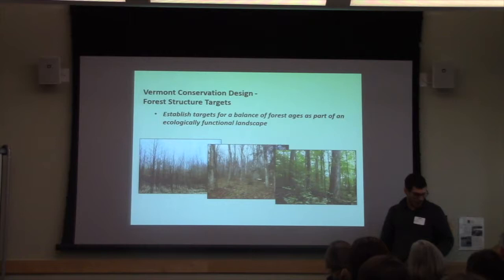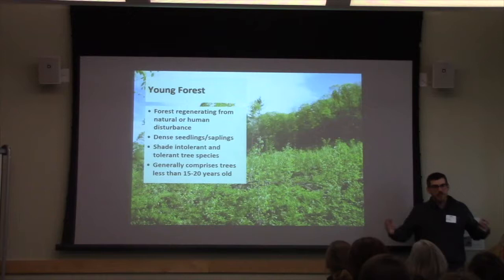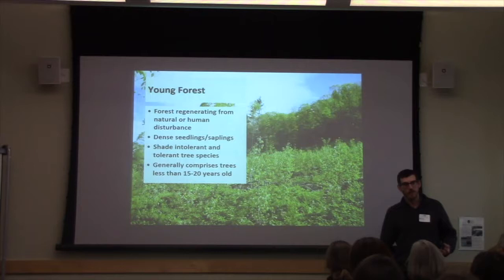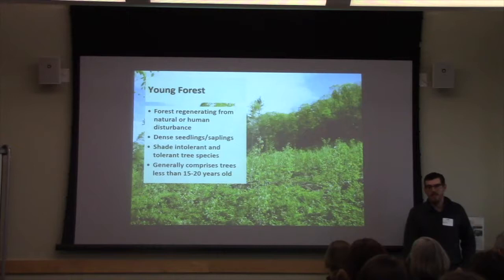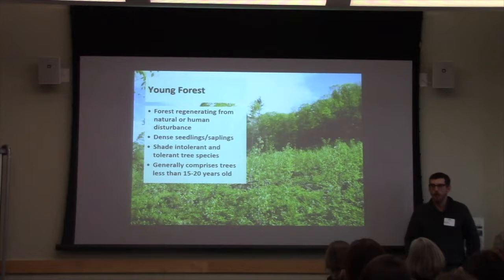Starting with young forest: at one time it was created mostly by natural disturbance, and now what's out there is probably created mostly through logging and management. You can picture this — dense stands of saplings, trees that are 15 to 20 years old. Young forest can be shade-intolerant species like aspen, but it can also just be dense regeneration of forest species like sugar maple or birch.